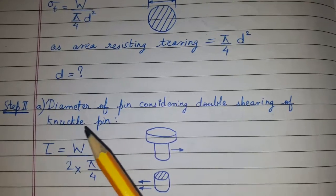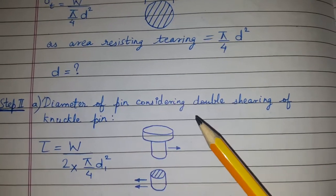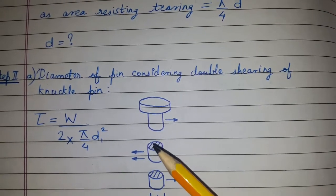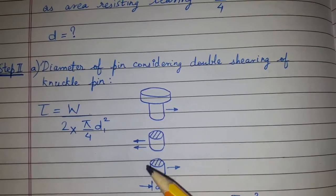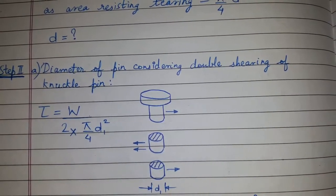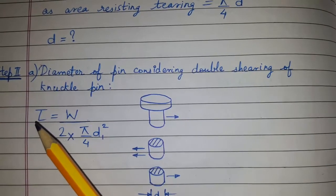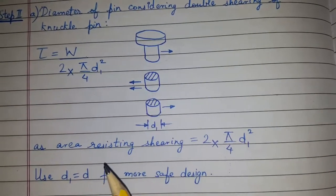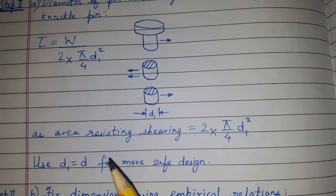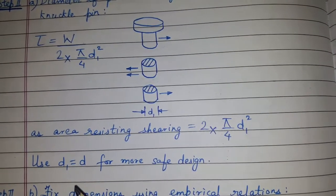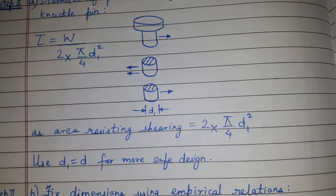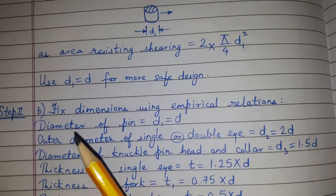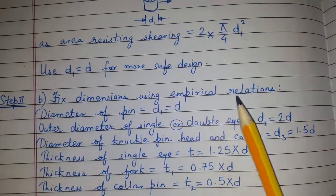Step 2: diameter of the pin, considering double shearing of the knuckle pin. These are the two areas which will resist shearing. Shearing stress is equal to load upon the resisting area. The resisting area is equal to 2 × (π/4) × d1². We will take d1 equal to d for a safer design. Then Step 2 also fixes dimensions using the empirical relationship.